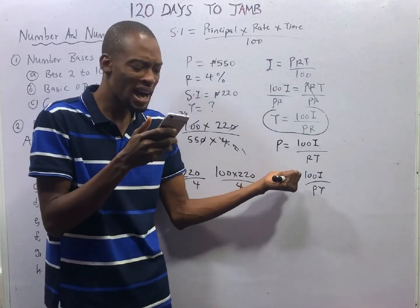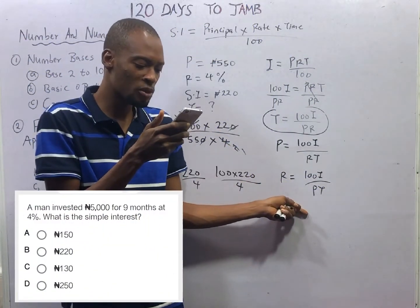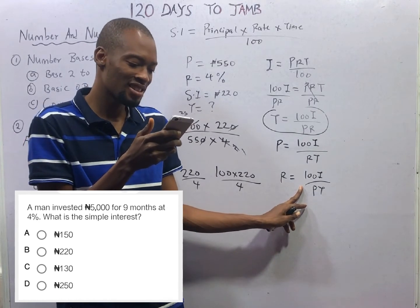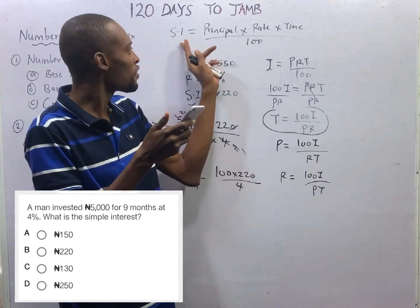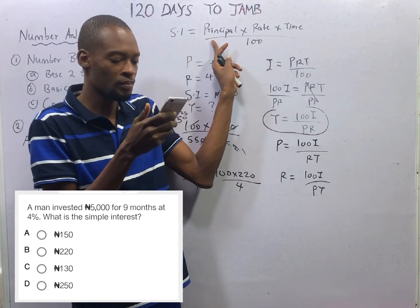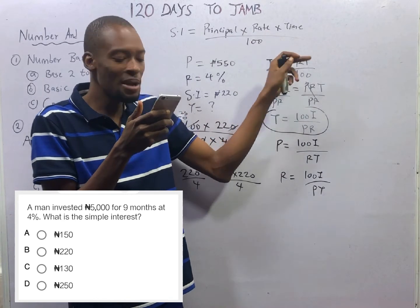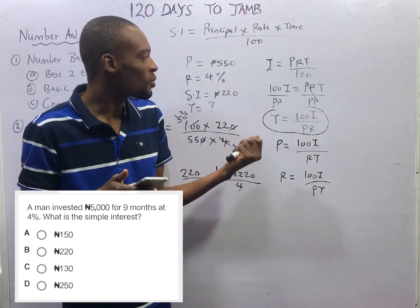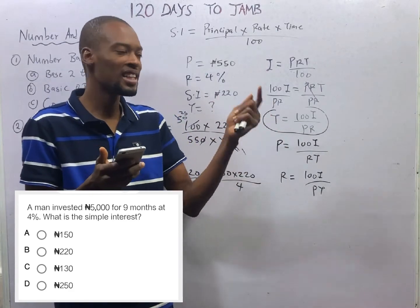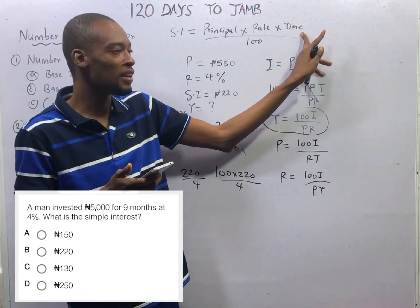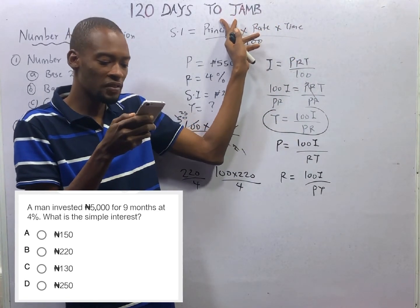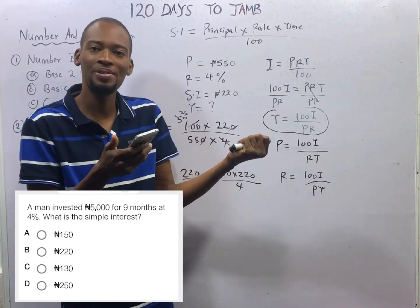A man invested five thousand naira for nine months at four percent. What is the simple interest? We are looking for simple interest. Principal is the amount invested: 5,000 naira. Rate is 4%. Time is nine months, so convert it to years: nine divided by twelve equals three over four years. Substituting into SI equals PRT over 100: 5,000 times 4 times three-quarters, all over 100 — you should get one hundred and fifty naira.